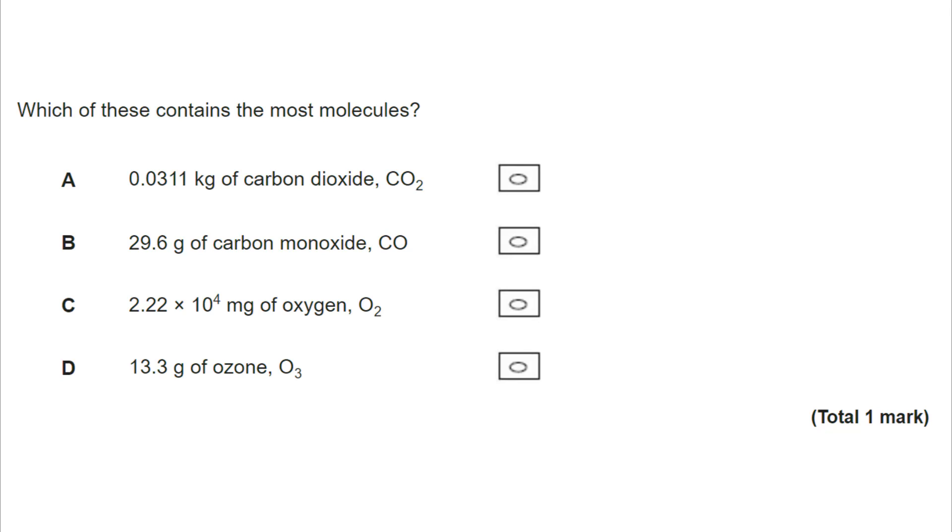So we want to know this time which has the most molecules. Let's go through in turn. For A, I have converted my kilograms to grams, divide by the MR, and I've got 0.707 moles. I now compare that to 29.6 grams of carbon monoxide. Now, my mass is in grams already. I need to work out the MR, 28. When I do that, I get 1.057 moles. So A is not the right answer. It's definitely not the highest value.